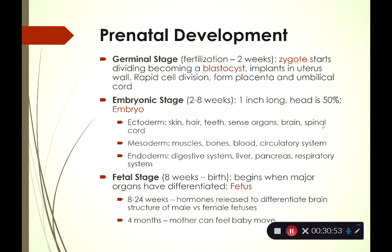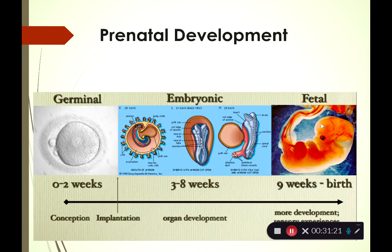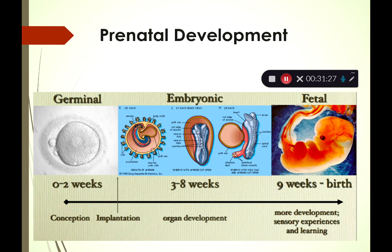The majority of prenatal development is in the fetal stage, from eight weeks all the way to 40 weeks. Cells differentiate into different organs and body parts. Between eight and 24 weeks, hormones are released that differentiate the sex organs. At four months, the mother can typically start to feel the baby moving. Here's a visual showing the blastocyst in the germinal stage, organs developing in the embryonic stage, and a fetus.